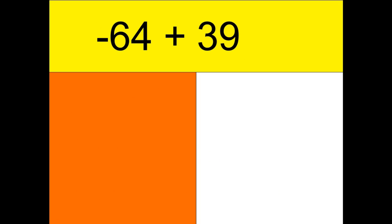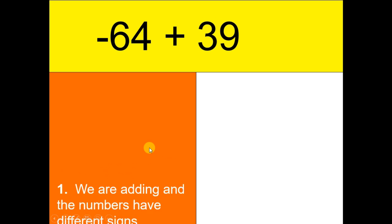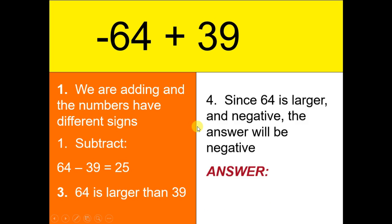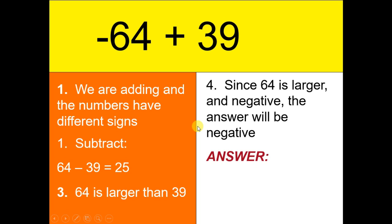Let's consider another example: negative 64 plus 39. Since they have different signs, we subtract the numbers — 64 and 39 — giving us 25. Now 64 is the bigger number and has a negative sign. So therefore, we follow that negative sign and our final answer is negative 25.